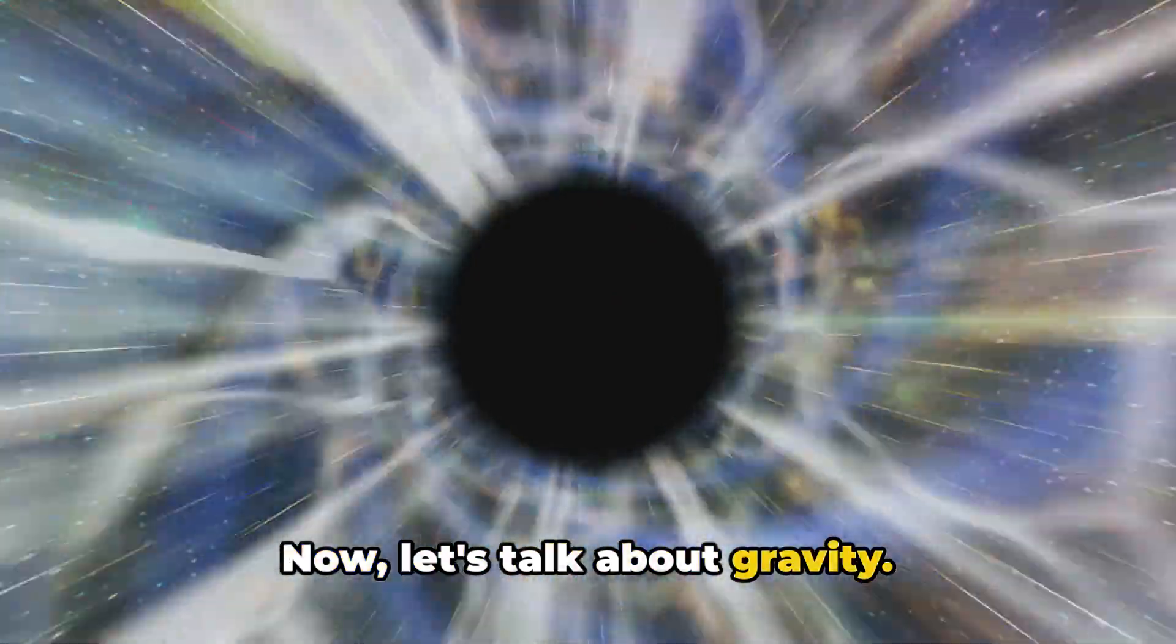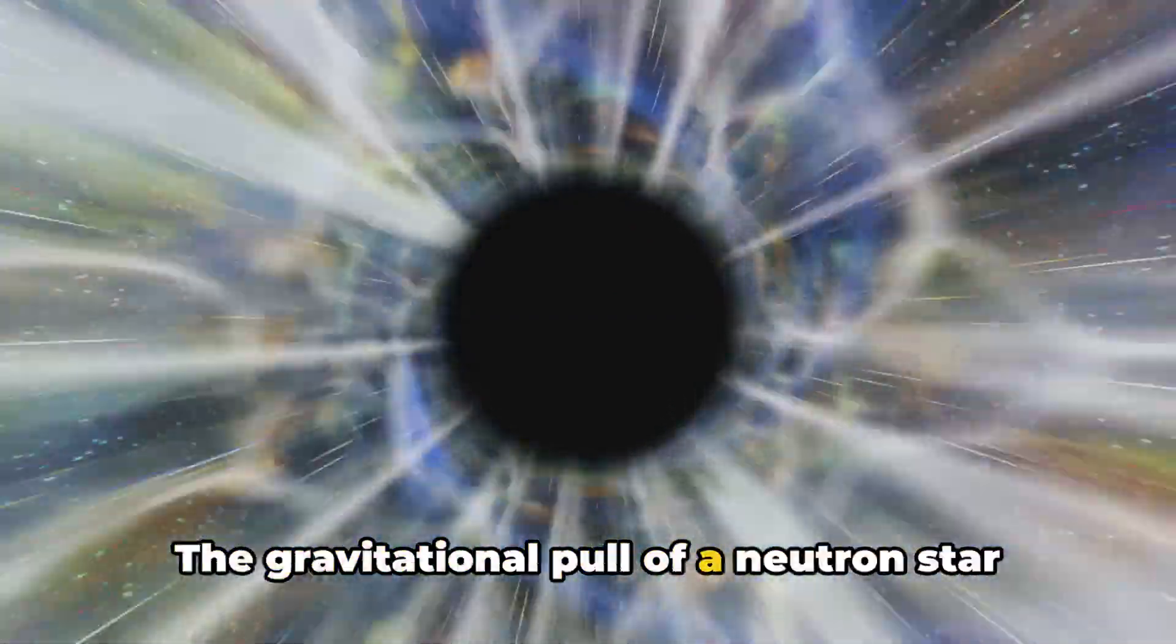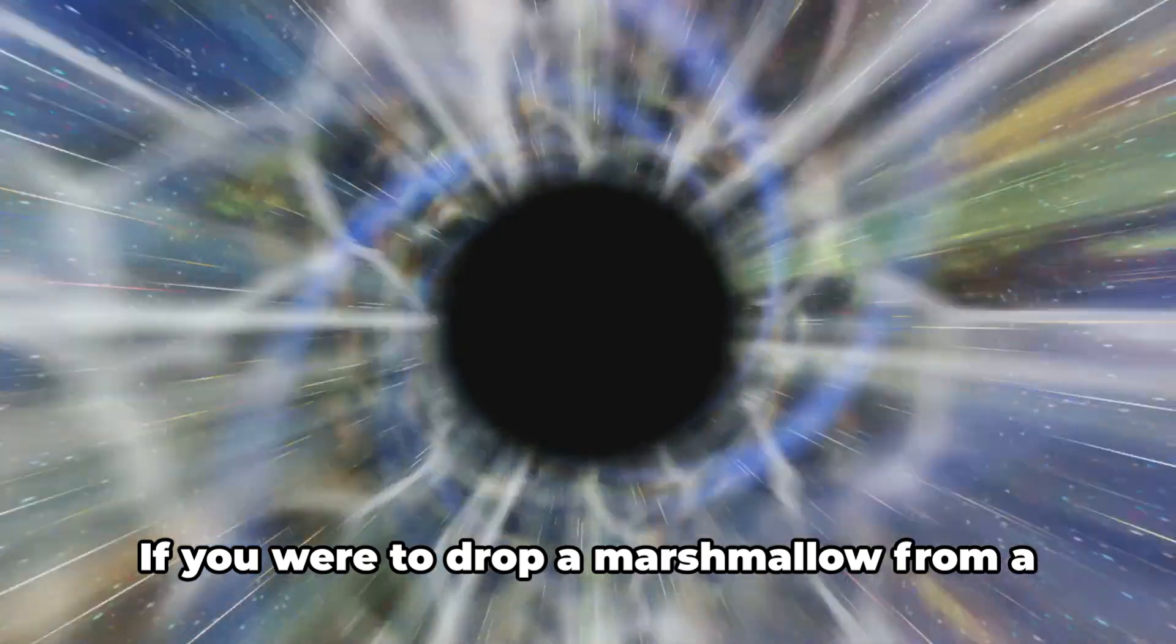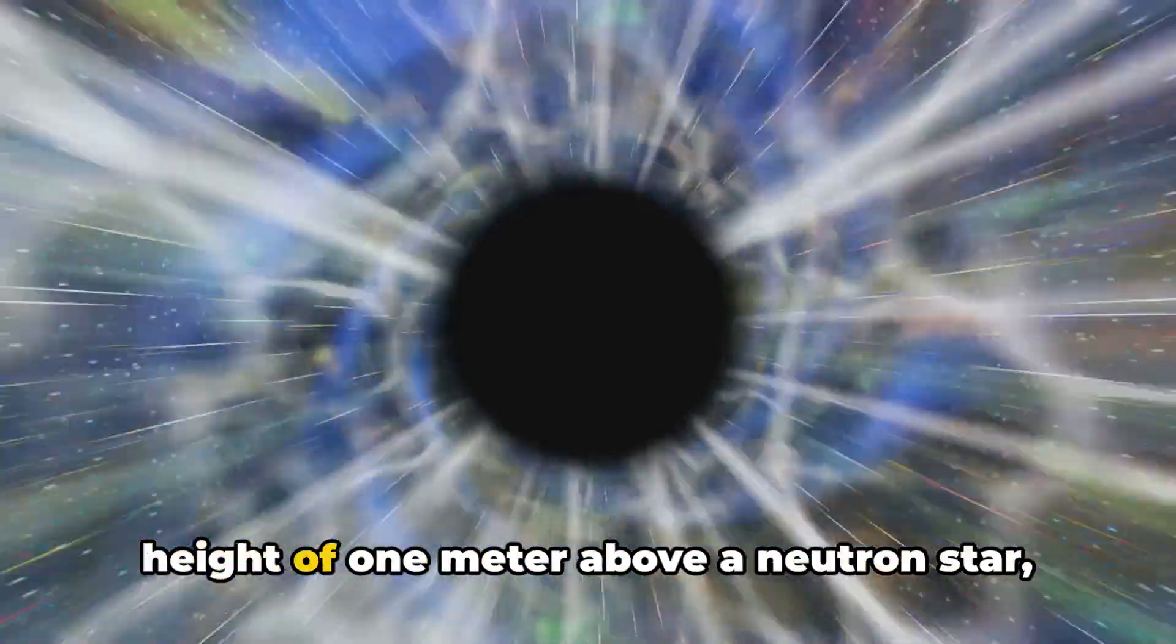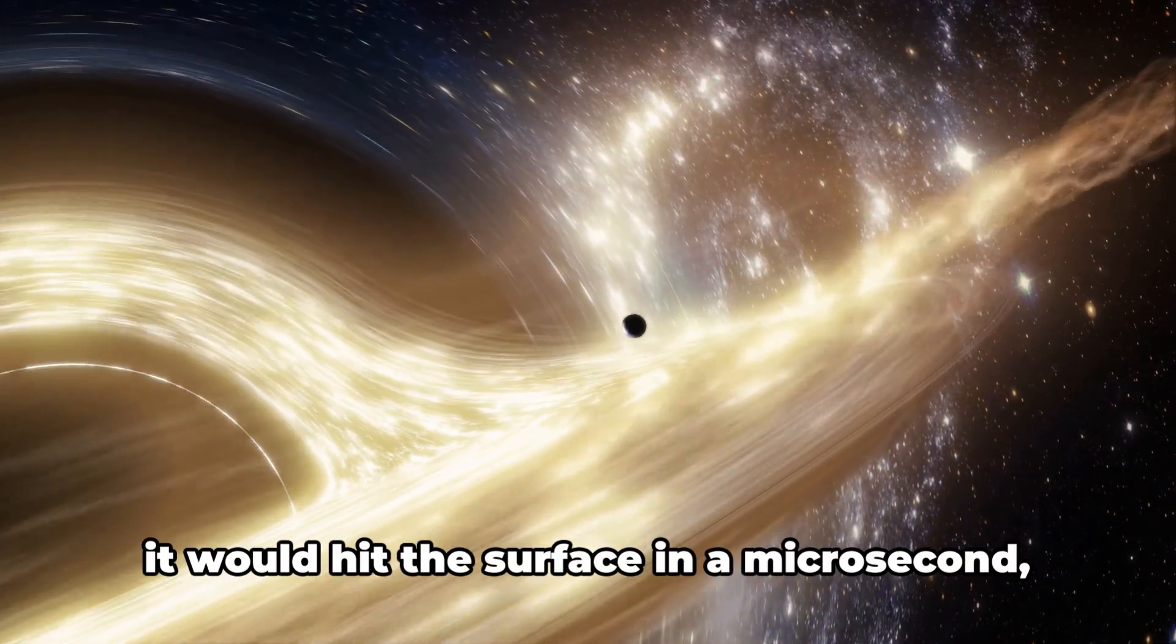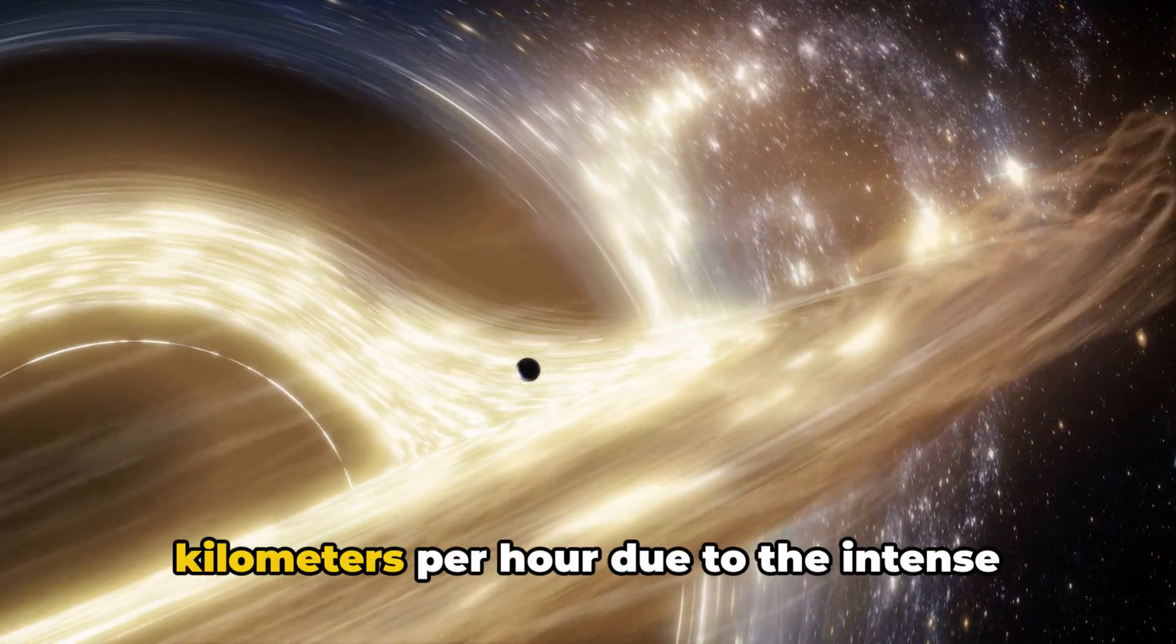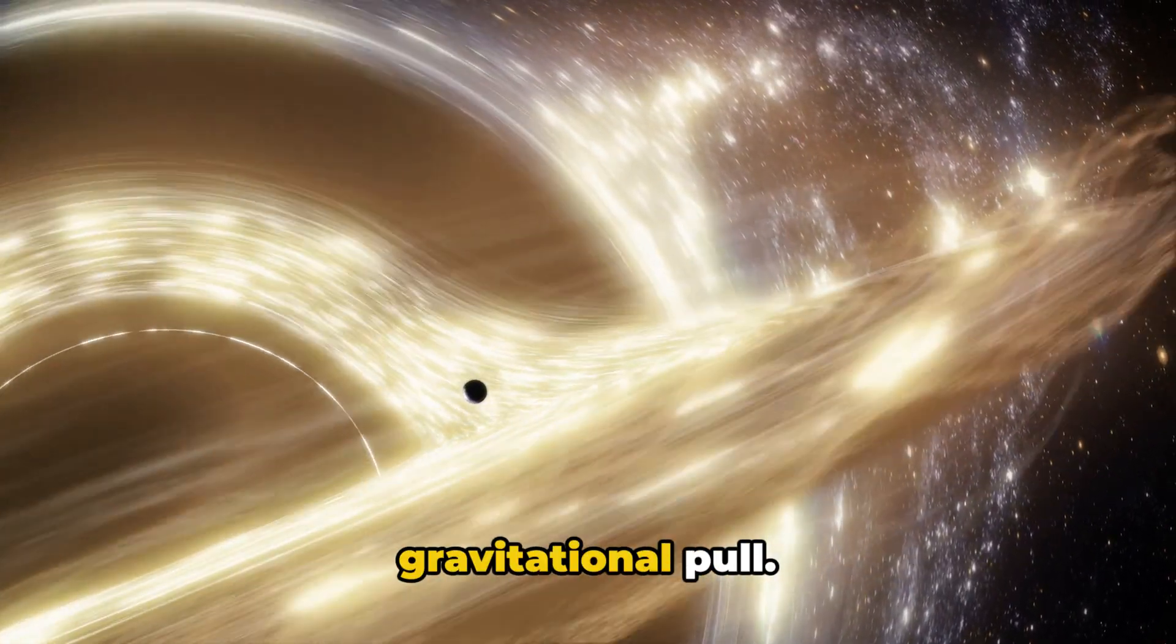Now, let's talk about gravity. The gravitational pull of a neutron star is astronomical, second only to a black hole. If you were to drop a marshmallow from a height of 1 meter above a neutron star, it would hit the surface in a microsecond, traveling at about 7 million kilometers per hour due to the intense gravitational pull.